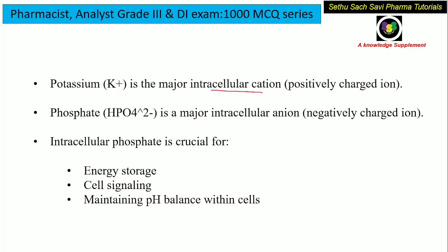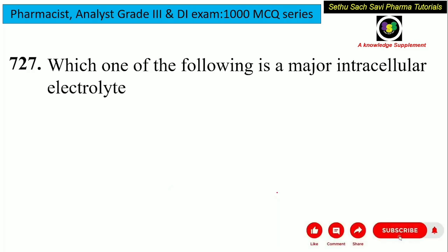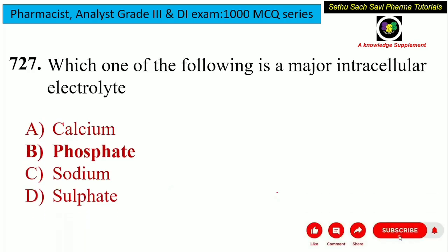The major intracellular cation is potassium and the major intracellular anion is phosphate. Intracellular phosphate is very important for storing energy, for cell signaling, and for maintaining the pH balance within the cells. So the answer for this question is option B, phosphate.